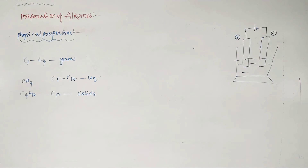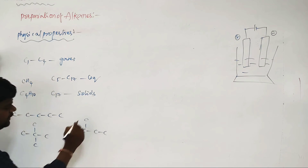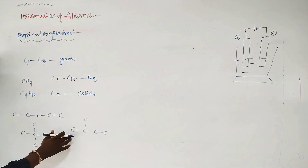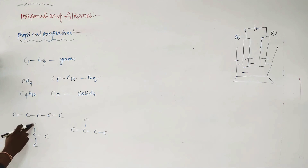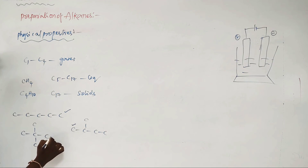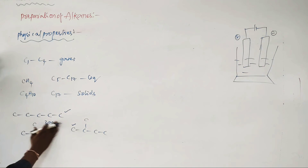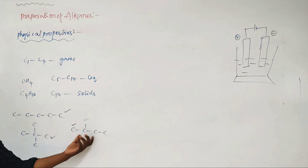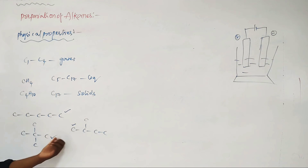For isomers such as n-pentane, isopentane, and neopentane — all have the same molecular formula but different structural arrangements (isomerism) — their boiling points differ. n-Pentane has the highest boiling point, then isopentane, then neopentane (the most branched). As branching increases, surface area decreases and boiling point decreases. Conversely, as surface area increases, boiling point increases.